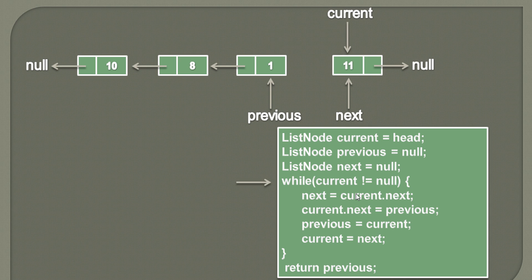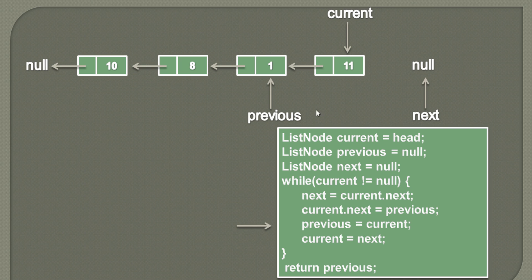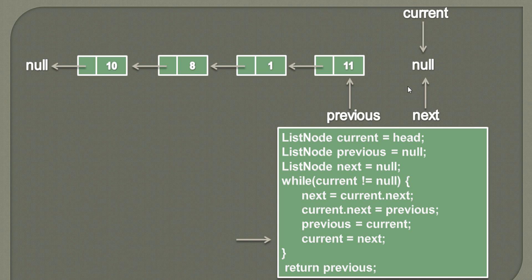We again check whether current equals null — it's not null. So next points to current.next, but here current.next points to null, so next will be pointing to null. To current.next we assign the previous node value, then we traverse previous to point to current. Finally we assign current the value of next, which is null. We execute the while loop again and since current equals null, the condition is false and the while loop breaks out.